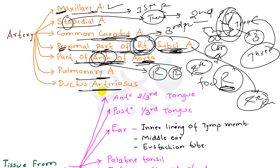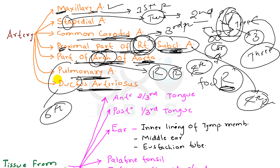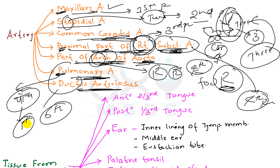Now coming to the pulmonary artery and ductus arteriosus. From 'P' it is number 'patch' — meaning 5 — but the fifth pharyngeal arch undergoes degeneration. So the remaining is the sixth pharyngeal arch. Therefore, the pulmonary artery and ductus arteriosus are derived from the sixth pharyngeal arch.